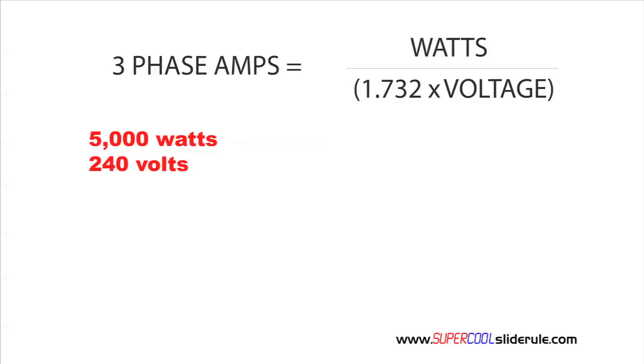Our unknown are amps. So, amps are going to be equal to 5,000. Now, never forget when you have something in parentheses, you must do everything in parentheses first. So, it is going to be 5,000 divided by 1.732 times our voltage was 240. So, we end up with amps are equal to 5,000 divided by 415.68.